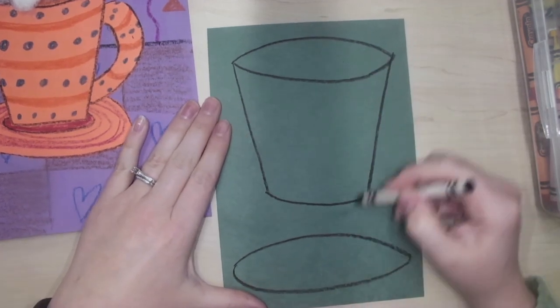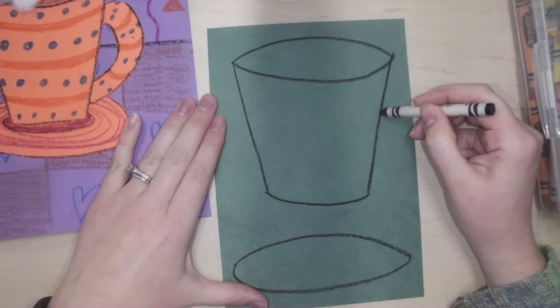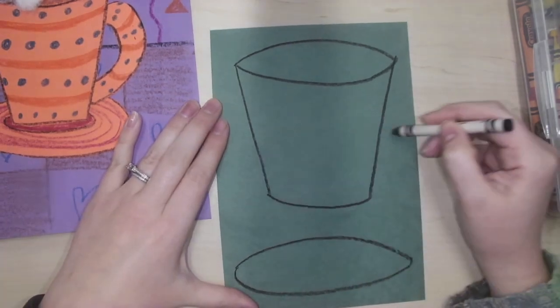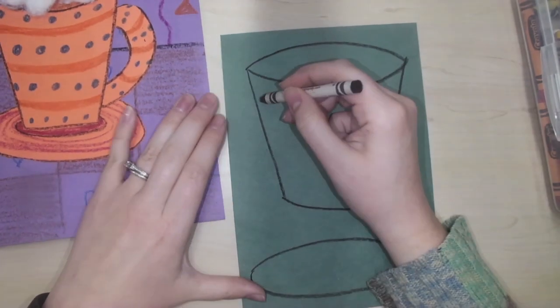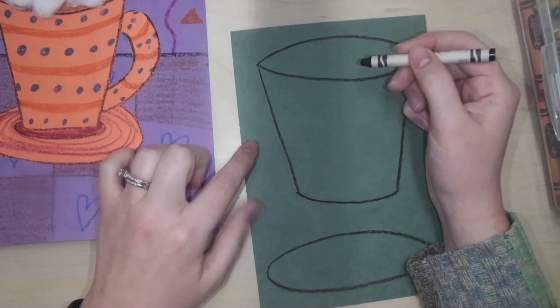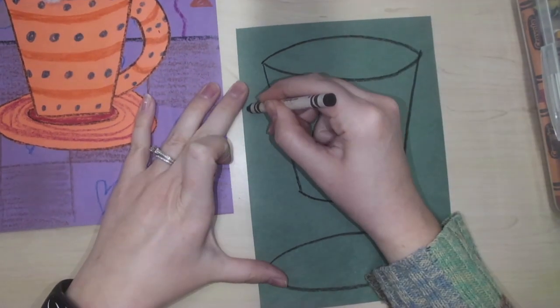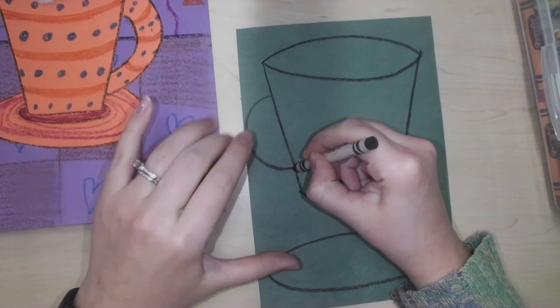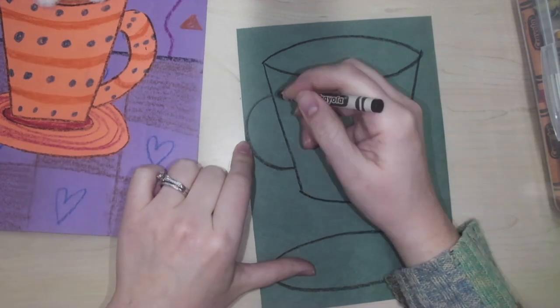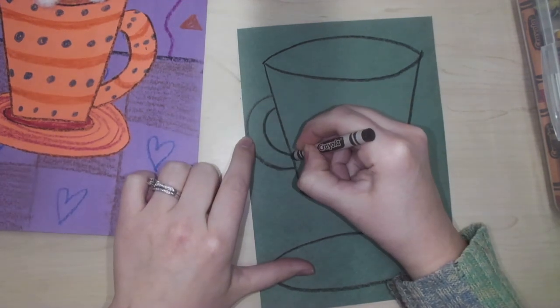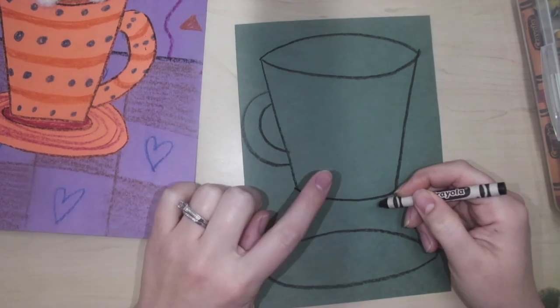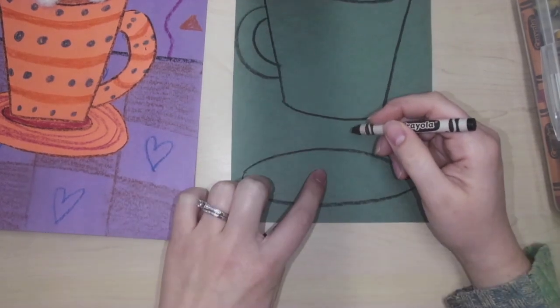I also need a handle for my mug. So to draw my handle, I'm going to pick either side and I'm going to draw it as big as I can, but I don't have a lot of space. So I'm going to draw a curve that goes pretty far away from the mug, almost to the side of the paper. And I'm going to do one more curve next to it. Now I have my mug and my saucer.